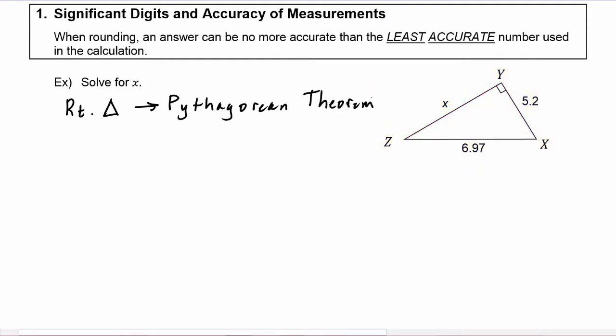So we have to take the sum of the squares of the legs. Y is the right angle, so that means the side labeled x and the side labeled 5.2 are the legs. So we can take x squared plus 5.2 squared is equal to 6.97 squared.